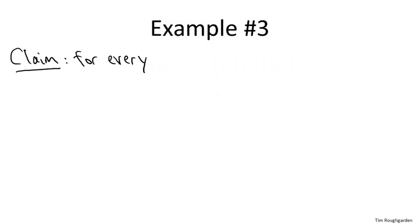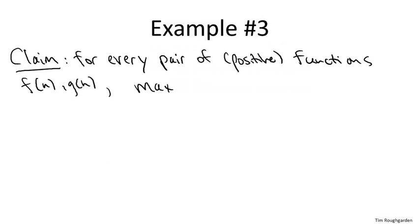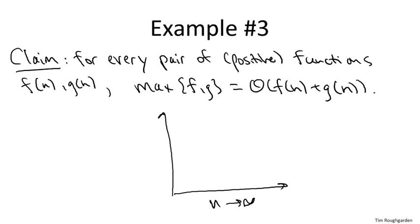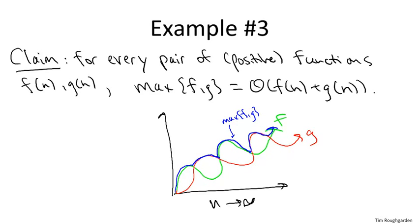Here's going to be the formal claim we're going to prove. For every pair of functions f and g, both of these functions are defined on the positive integers. The claim is that it doesn't matter up to a constant factor whether we take the pointwise maximum of the two functions or whether we take the pointwise sum of the two functions. Let me make sure it's clear what I mean by the pointwise maximum, by max f and g. If you look at the two functions, maybe we have f being this green function here, and we have g equal to this red function, then by the pointwise maximum max{f,g}, I just mean the upper envelope of these two functions. That's going to be this blue function.